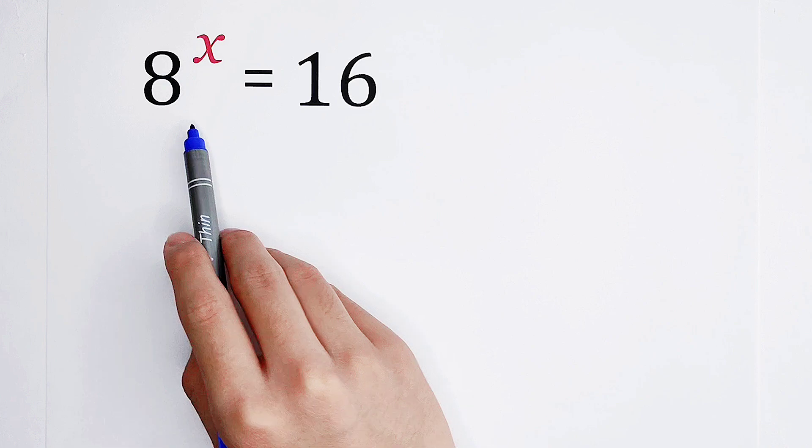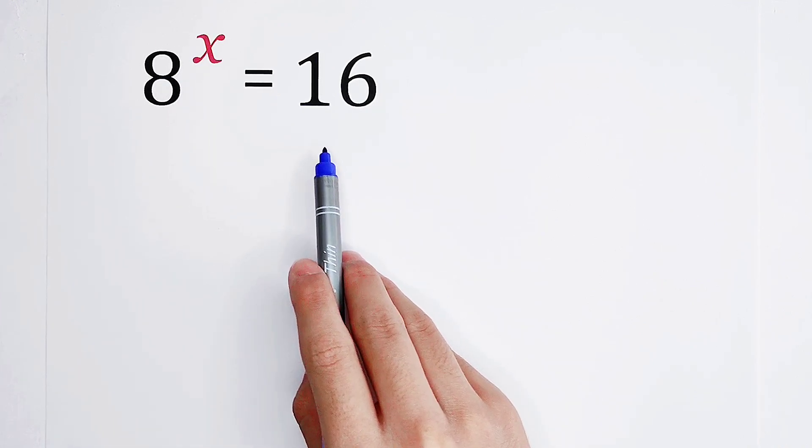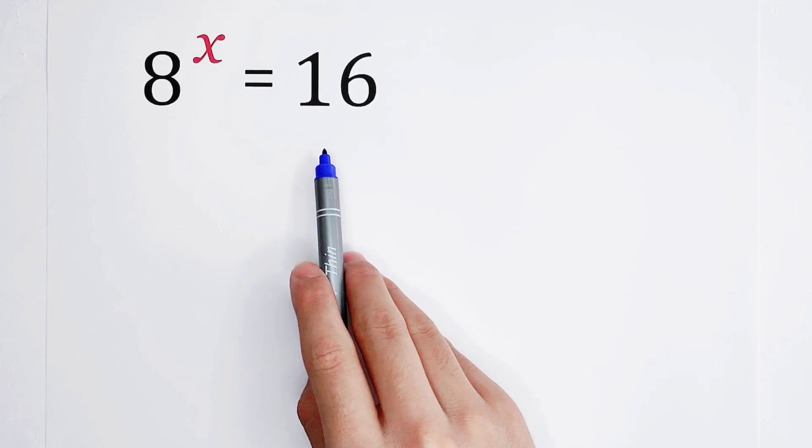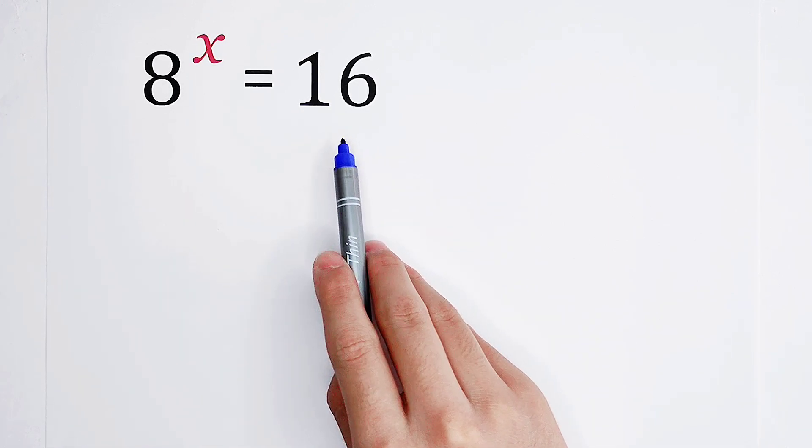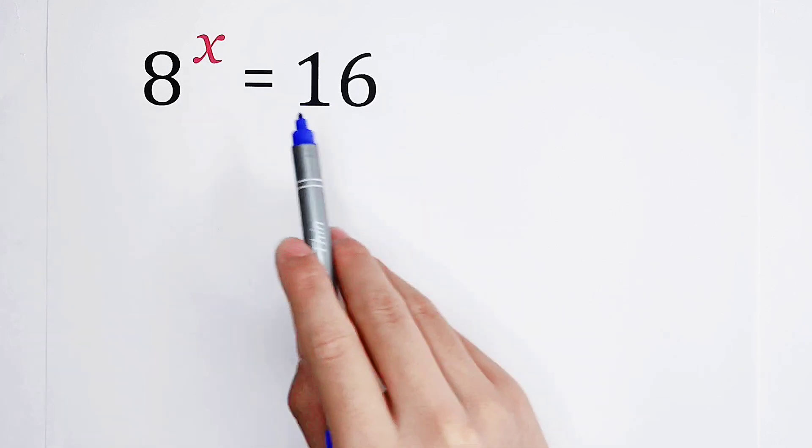However, the right-hand side is a simple number, 16. And the relationship between 8 and 16 is that 16 is 2 times 8. So we can substitute 2 times 8 for 16.